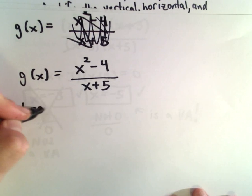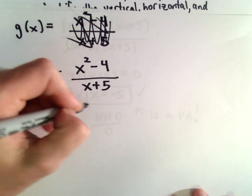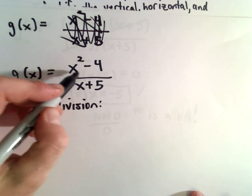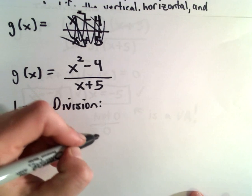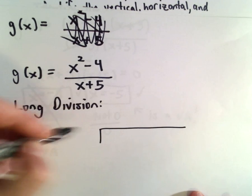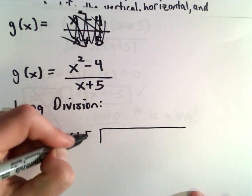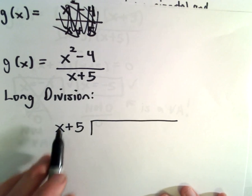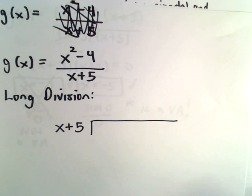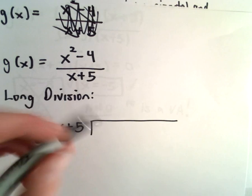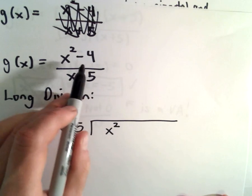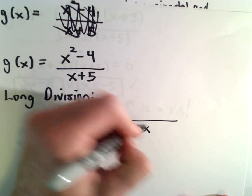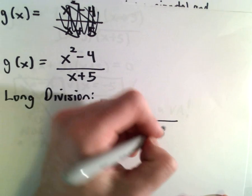We're going to do our long division now to find the oblique asymptote. So x squared minus 4, that's being divided by x plus 5. You want things to be in descending powers, which we have here. Notice there's no term involving x, but I'm going to fill it in as a placeholder. So I'm going to have 0x and then minus 4.